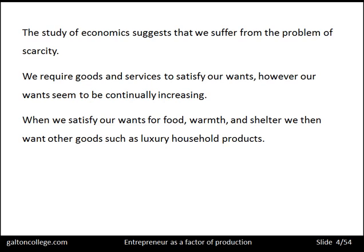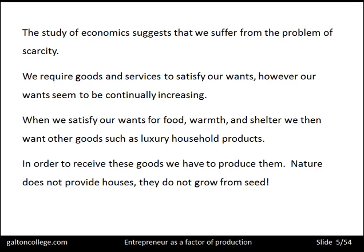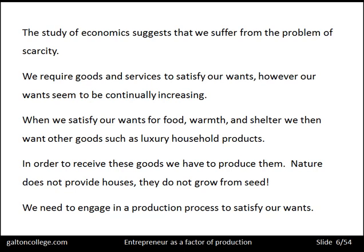We satisfy our desire for food and shelter — these are our basic requirements. But then we go up to the next level when we have other requirements, and finally we get to the very top where we're self-actualized in the words of Maslow. The Maslow theory is looked at in other videos elsewhere on the course. In order to receive these goods, we have to produce them — nature does not provide houses. Houses don't grow from seed; we have to build them.